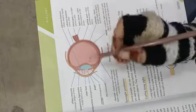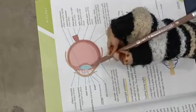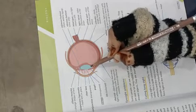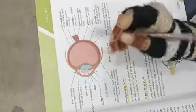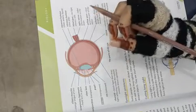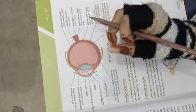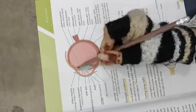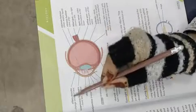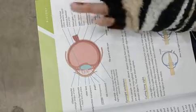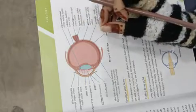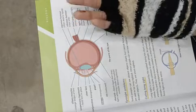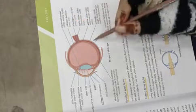Next, behind the cornea, is the lens. The lens is basically elastic and its thickness is controlled by the ciliary muscles. As you can see, the two dot-like structures are the ciliary muscles. The lens focuses the light rays that pass through it in order to create a clear image of an object.